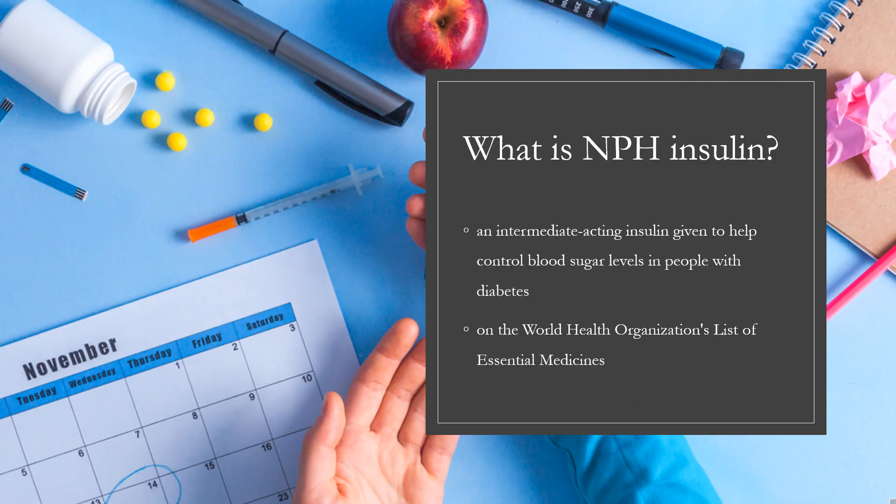Neutroprotamine Hagedorn insulin, also known as isophane insulin, is an intermediate-acting insulin given to help control blood sugar levels in people with diabetes.